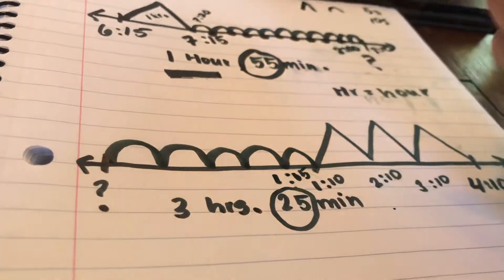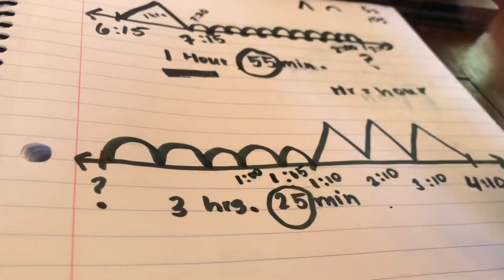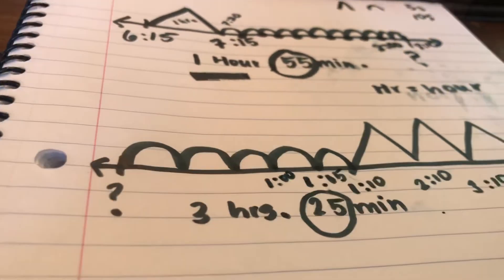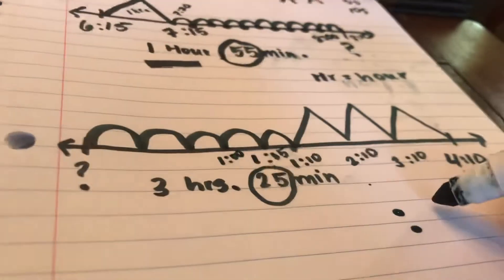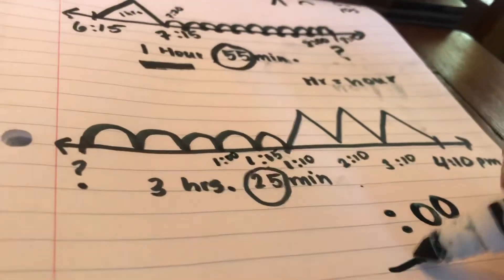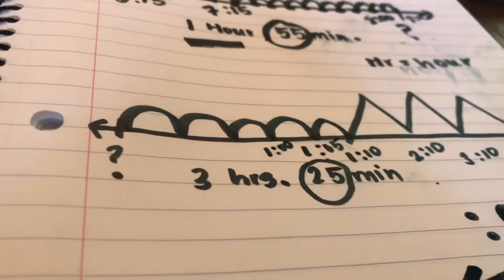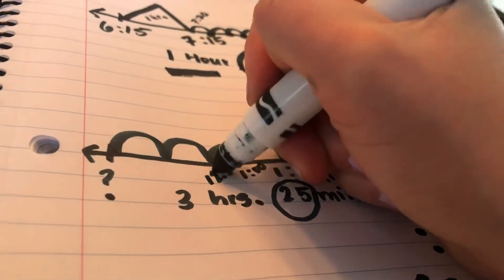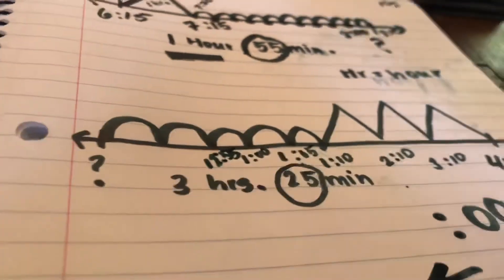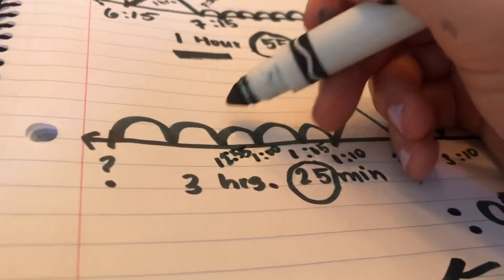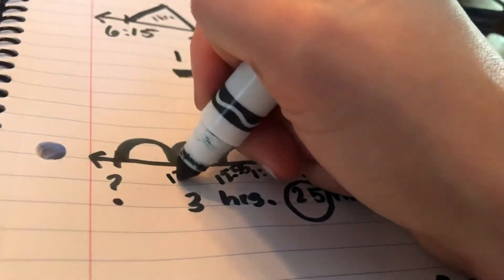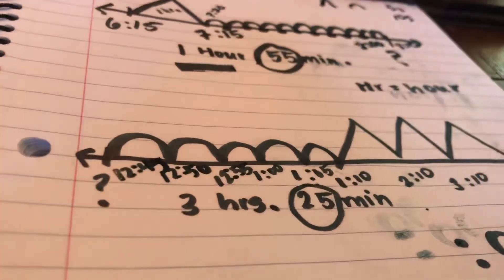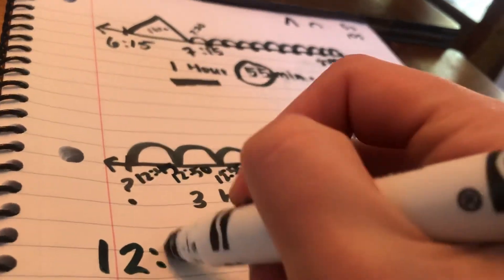Back five more would be 1:00 — wait. Once I pass an o'clock going backwards, I'm actually going to the hour before. So I jump back to 12:55. Not 12:60 — 12:60 would be one o'clock. Then 12:50, then 12:45. She started baking her cupcakes at 12:45. I did this by counting backwards, first my hours then my minutes, with mountains and hills.